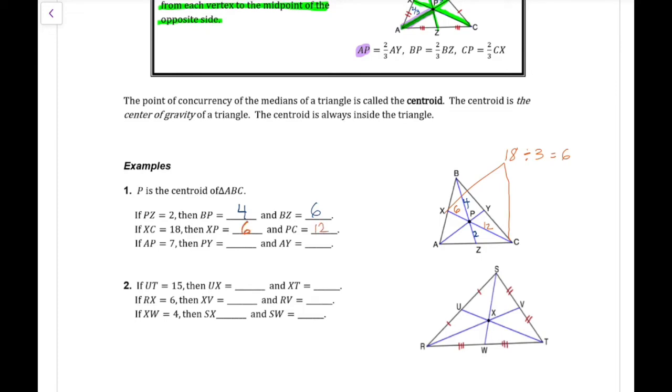The next side, we have AP is seven. That is the long side of the triangle. So we're going to cut it in half for the short side. Three and a half would be the short side. If I take seven plus 3.5, I get 10.5 for the whole entire AY. So PY would be 3.5 and AY would be 10.5.